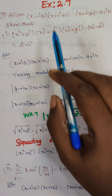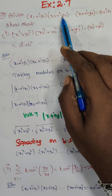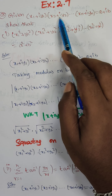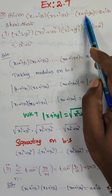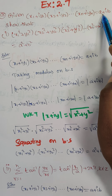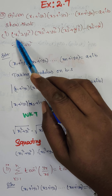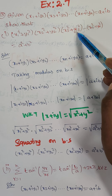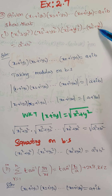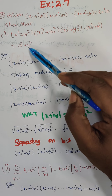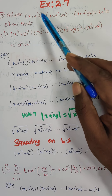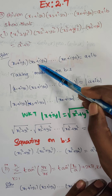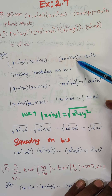Hi students, this is Dinesh. Today we are going to discuss Exercise 2.7, Question Number 3. Given (x1 + iy1)(x2 + iy2)...(xn + iyn) = a + ib, we need to show two results. The first substitution to prove is: x1² + y1², x2² + y2², x3² + y3²... xn² + yn² = a² + b². The given condition is (x1 + iy1)(x2 + iy2)...(xn + iyn) = a + ib.